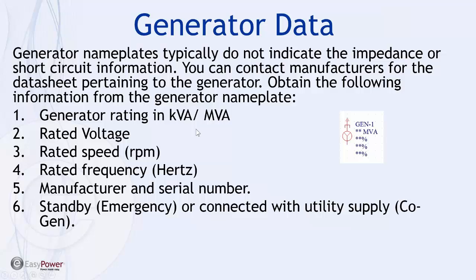Generators also have an important part — even though we may only have operations on a generator for a short period of time, or sometimes an unexpectedly long period, they need to be included in the arc flash assessment. In some cases they can be the restricting scenario if there needs to be inspection or maintenance while under generator power. The generator rating in KVA or MVA, the rated voltage, rated speed, frequency of the power generated, manufacturer and serial number are all critical. Frequently you'll have to get sub-transient reactance data off the data sheet, and the tools can help identify this through the EasyPower data dialog box for generators.